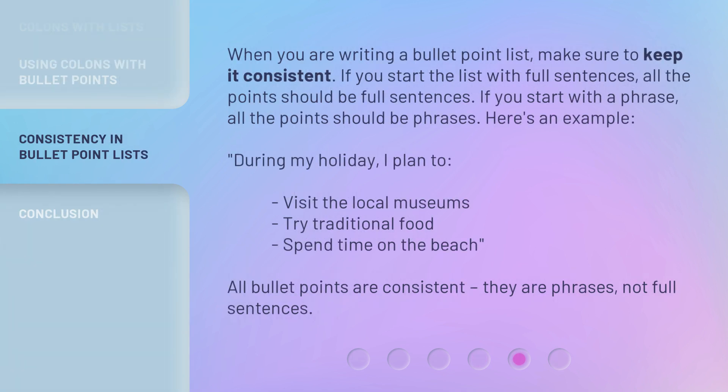When you are writing a bullet point list, make sure to keep it consistent. If you start the list with full sentences, all the points should be full sentences. If you start with a phrase, all the points should be phrases. Here's an example: During my holiday, I plan to: Visit the local museums. Try traditional food. Spend time on the beach. All bullet points are consistent — they are phrases, not full sentences.